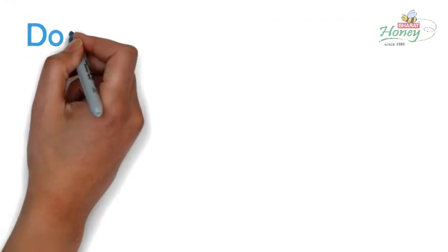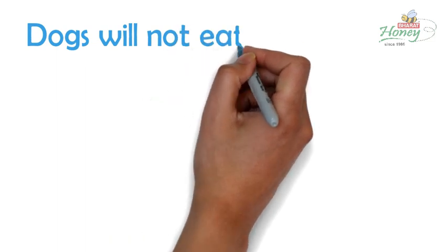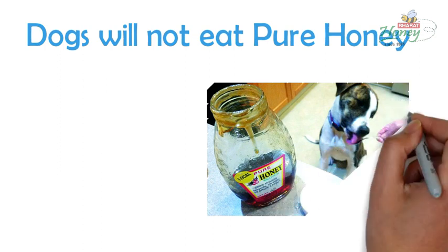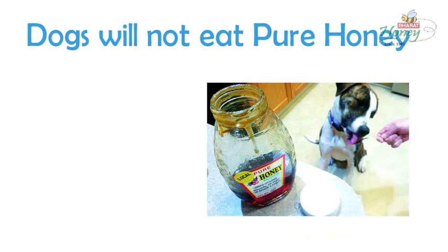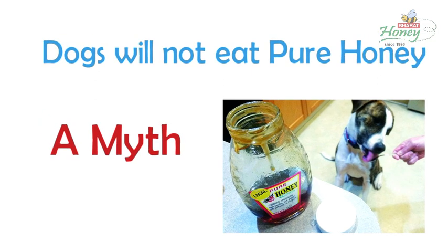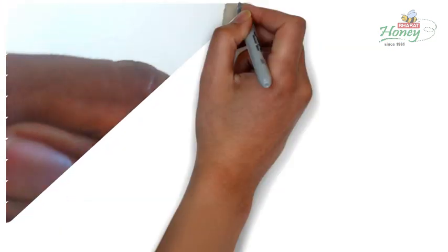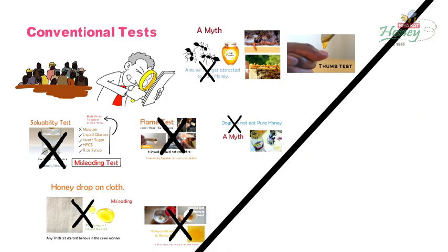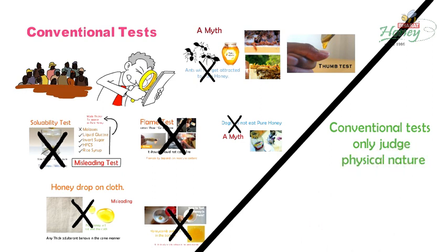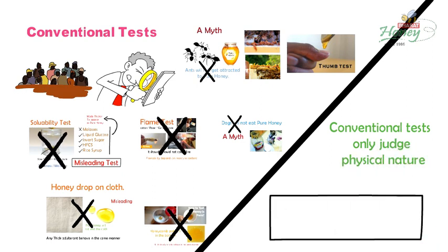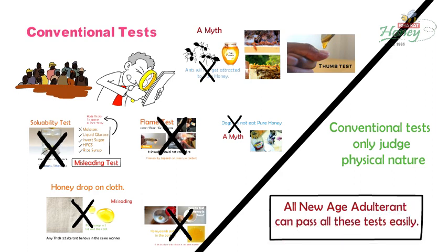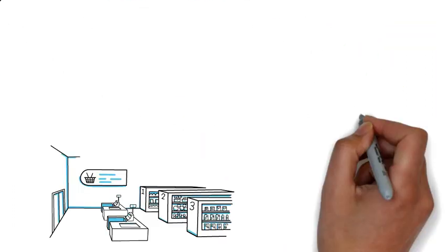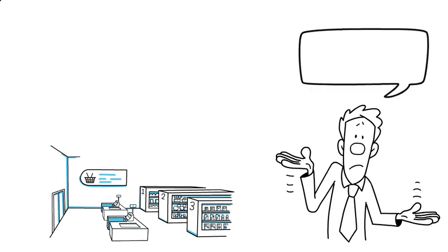Another popular myth is that dogs will not eat pure honey. It is again a baseless myth, as there is no reason why a hungry dog will not eat pure honey — of course, if the dog isn't hungry, it won't eat anything, whether it's honey or not. Many more tests like these exist in different cultures, but the truth is that no conventional test can identify the purity of honey, because all these tests judge only the physical nature of honey and all new-age adulterants are manufactured to mimic that physical nature.